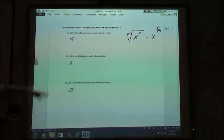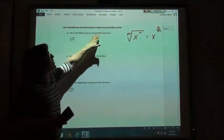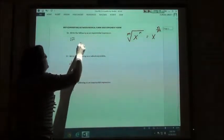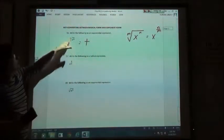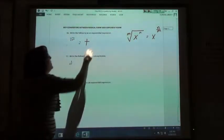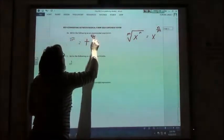If I'm in radical form, they're going to have me put it in exponential form. This would be t to what power? The 4 goes on top and the 5 goes on the bottom. So t to the 4 fifths power.